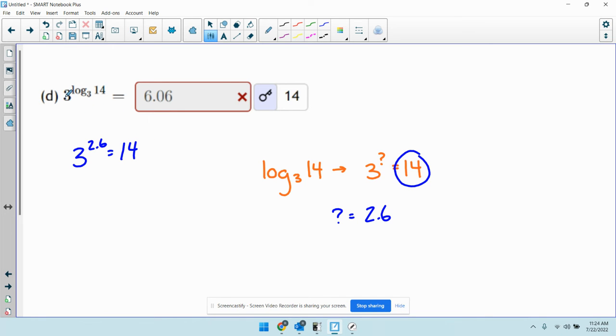Okay, this is basically saying raise 3 to the power that when I raise 3 to it, I get 14. Raise 3 to the power that when I raise 3 to it, I get 14. So you get 14.